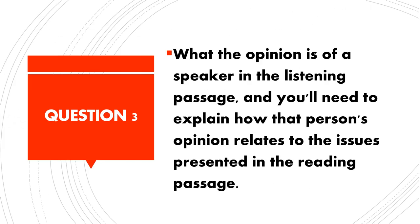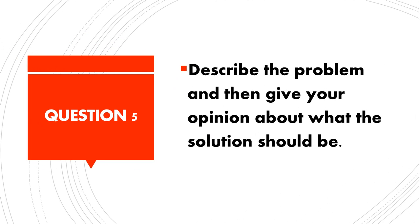Now let's look more closely at what these campus situation questions look like and what they will be asking you to do. For Question 3, where you have both reading and listening passages, you will be asked what the opinion is of a speaker in the listening passage, and you will need to explain how that person's opinion relates to the issues presented in the reading passage. So you're essentially summarizing and combining information from two sources. For Question 5, where the listening passage is a conversation about a campus problem and one or more solutions, you will need to describe the problem and then give your opinion about what the solution should be.